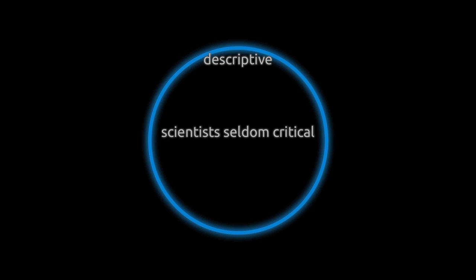Kuhn further says that scientists are seldom critical. Most of the time, they pursue their work on the basis of what has gone before, without questioning it, without trying to falsify it, but rather trying to fill in gaps. Occasionally, however, there arises a situation when there is actually a revolution within science, and this is the topic of his famous book, The Structure of Scientific Revolutions.